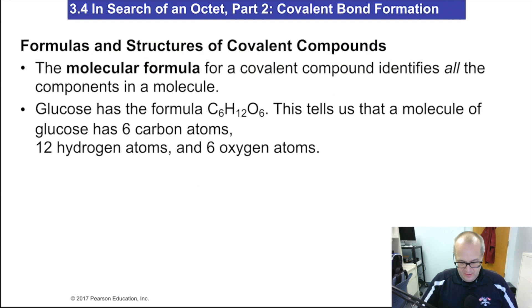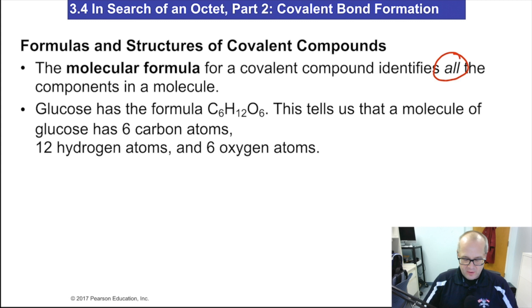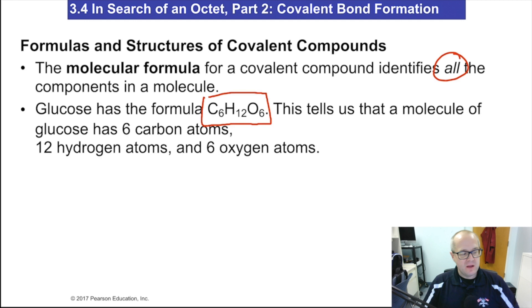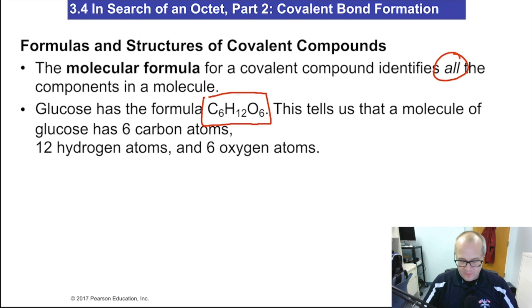Formulas of covalent compounds. The molecular formula for a covalent compound identifies all the components of the molecule. Glucose, for example, is C6H12O6 — this tells us there are six carbons, 12 hydrogens, and six oxygens. Unlike the ionic formula, which tells you the ratio of cations to anions, the molecular formula tells you exactly how many atoms there are in the molecule.